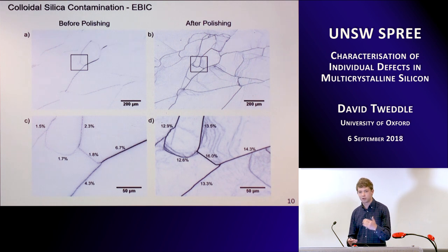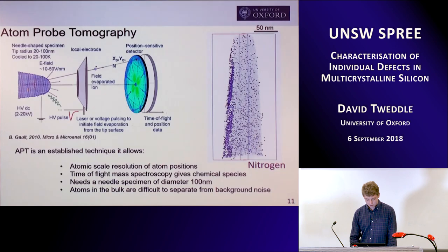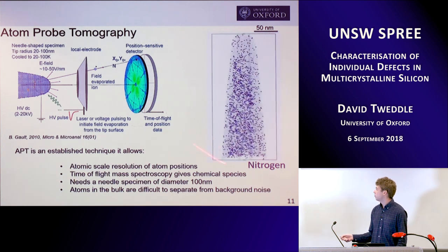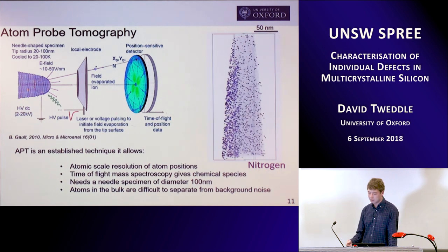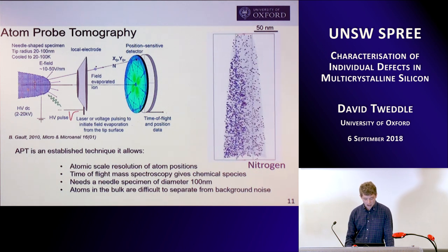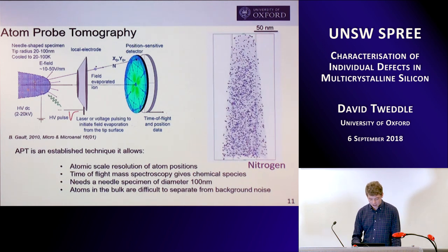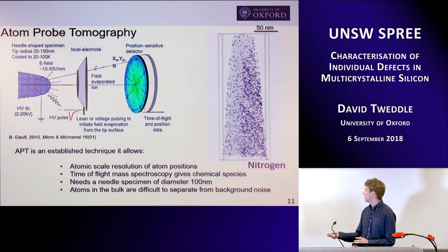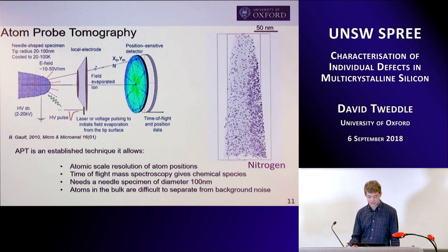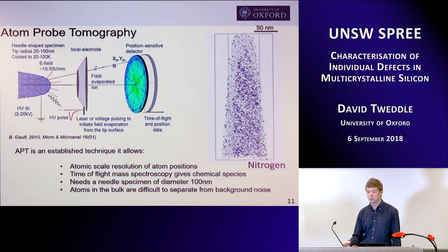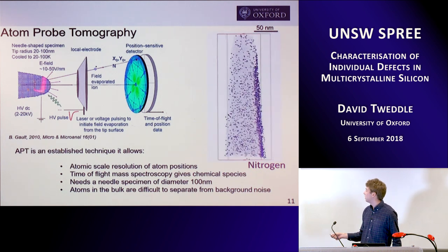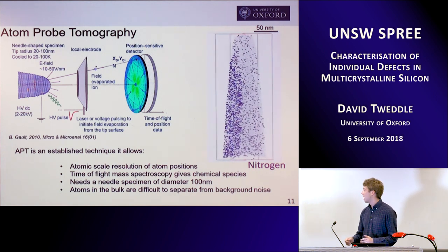The only explanation is we're introducing some sort of impurity from the colloidal silica polishing process. To analyse what impurities are caused by this polishing, we can use Atom Probe tomography. Atom Probe uses a needle-shaped specimen of around 50 nanometres in tip radius. You cool the needle down to around 50 Kelvin to minimise surface diffusion, then apply a standing field and pulse with a laser. Since you know the time of the pulse and evaporate these atoms and ionise them, they travel a length L and hit a position-sensitive detector, allowing time-of-flight mass spectrometry to identify the chemical species present.